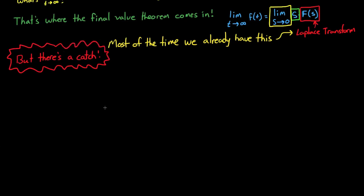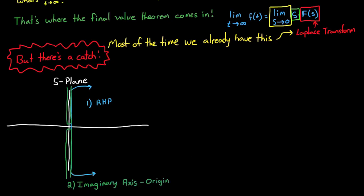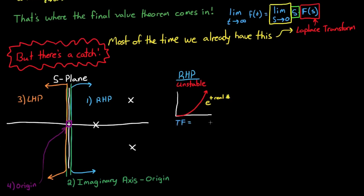So we need to develop some rules for when we can and can't use it. To show you graphically where you can use this equation, I'm going to use the s-plane and break it up into four different regions. Region 1 is the right half-plane, or anything to the right of the vertical imaginary axis. Region 2 is the imaginary axis, but without the origin. Region 3 is everything in the left half-plane, and Region 4 is the origin itself. We know that if there's a pole in the right half-plane, then the system is unstable, because the real component is positive and e raised to a positive real number blows up to infinity. So the final value of a system with a pole in the right half-plane does not exist — it is infinite.